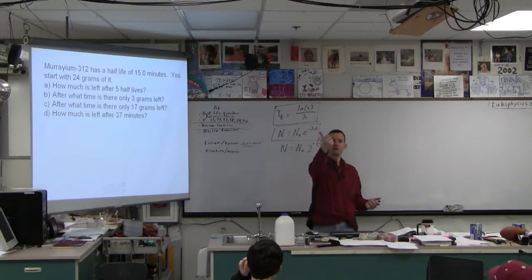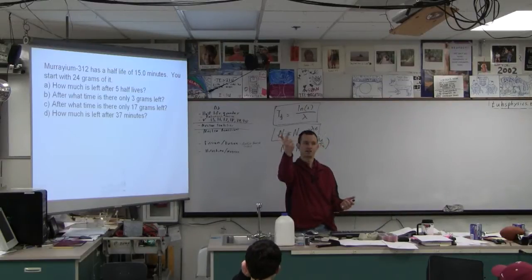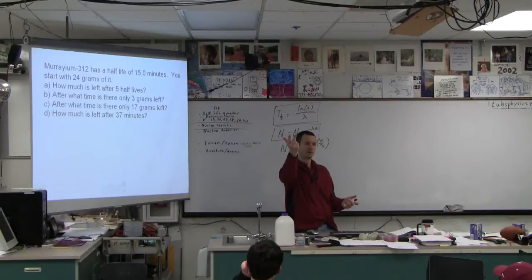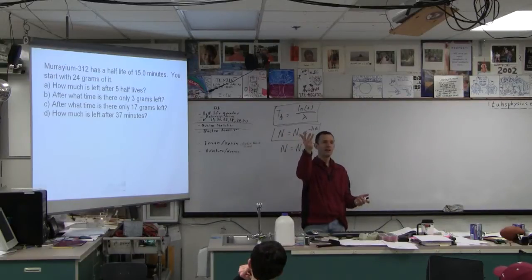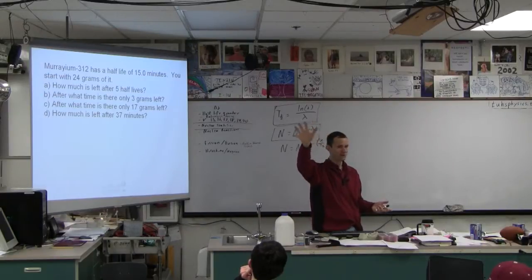So after the first half-life there is 12 left, correct? After the second there is 6. After the third there is 3. After the fourth there's one and a half and half of one and a half is 0.75. So we've cut it in half five times. That's easy, right?